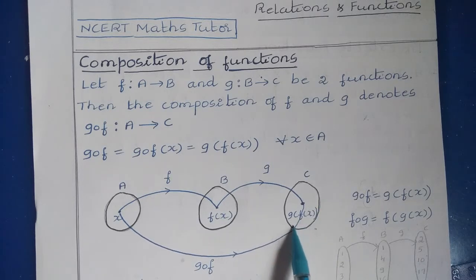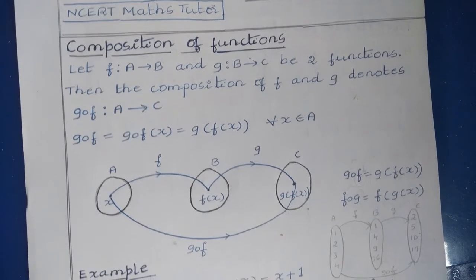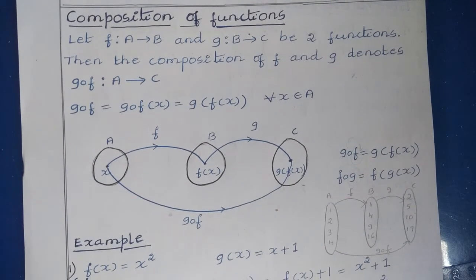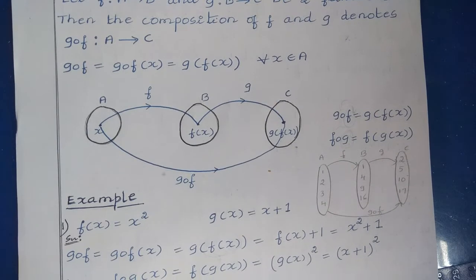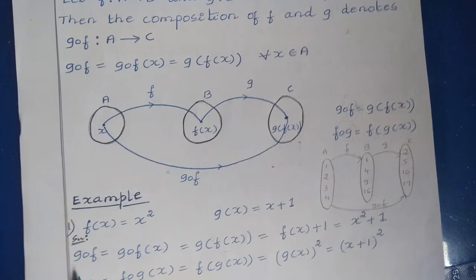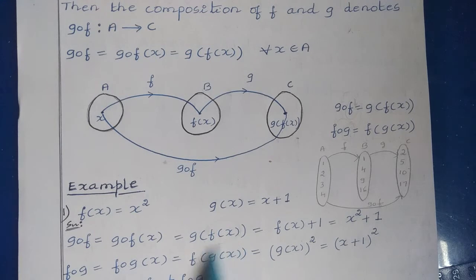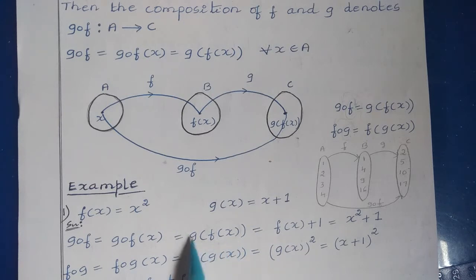In g(f(x)), the f function is applied first, after which the g function is applied. That is about the composition of functions, and always gof is not equal to fog. Let us understand this by taking an example: f(x) = x² and g(x) = x + 1. Now let us find gof and fog.